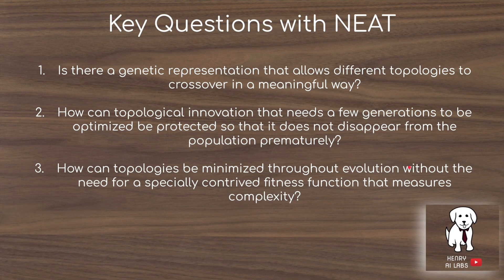The key questions the NEAT algorithm looks to answer are: first, is there a genetic representation that allows different topologies to cross over in a meaningful way? How do you encode neural network topologies such that crossover is possible? For example, if you have a binary encoding or a graph encoding of neural network architectures, it isn't obvious how you would cross over and mutate different members of the population.